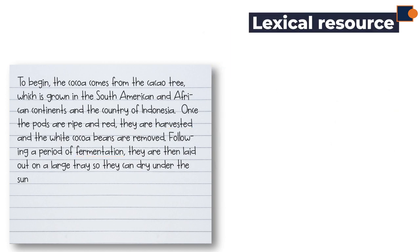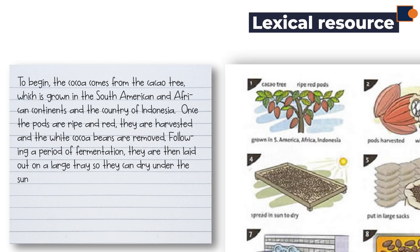Next comes the lexical resource criteria, which means using original vocabulary and different word forms. If you look at the first picture, it displays three notes: cacao trees, ripe red pods, and grown in South America, Africa, and Indonesia. Your task here is to make descriptive sentences using these notes.